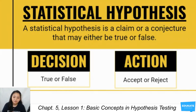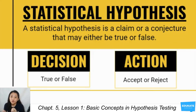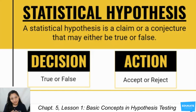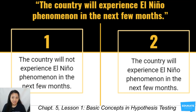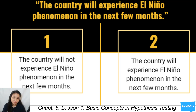So, either your friend is correct or your friend is wrong. After being given the claim, you now have two things to do: decide if it's true or false, and then either accept the claim or reject the claim. For example, the statement 'The country will experience El Niño phenomenon in the next few months' means it's either the country will experience it or the country will not experience it. The first statement is what we call a null hypothesis, while the second is what we call an alternative hypothesis.